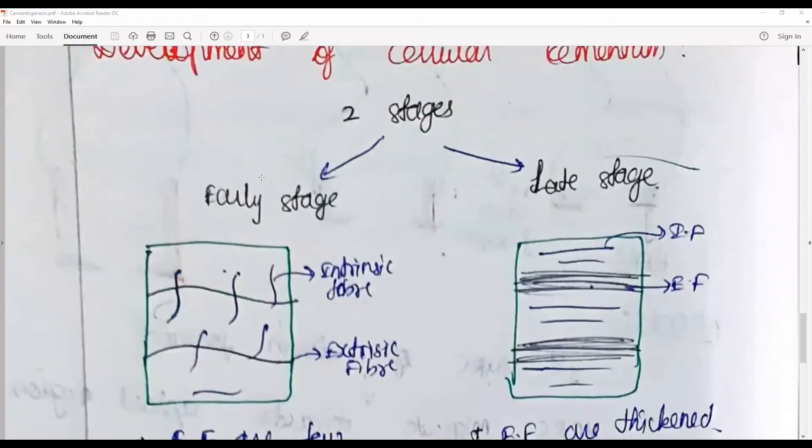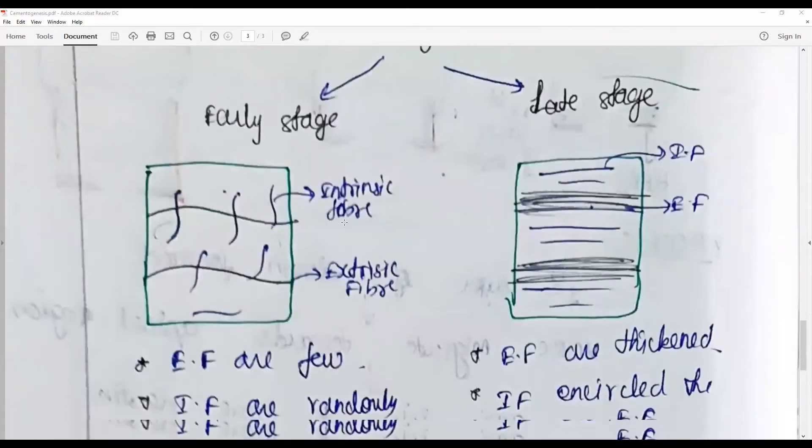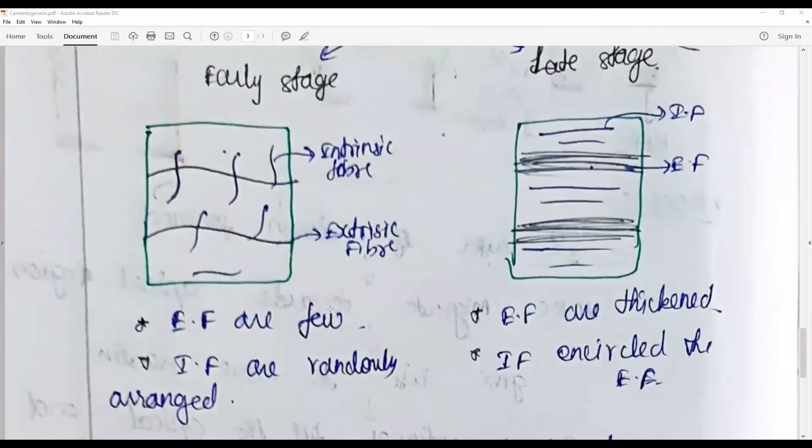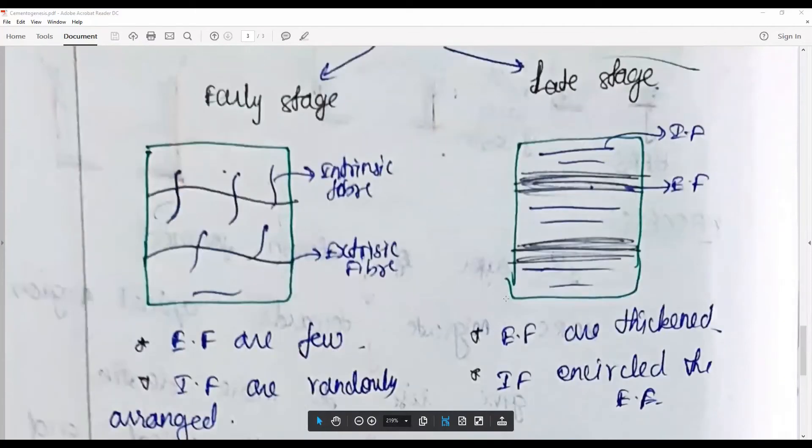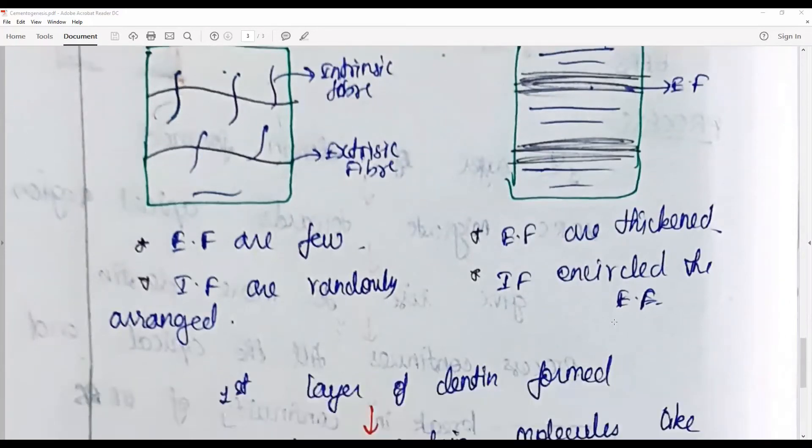The development of cellular cementum happens in two stages: early stage and late stage. In the early stage, the extrinsic fibers are very few and the intrinsic fibers are randomly arranged, whereas in the late stage the extrinsic fibers are thickened and intrinsic fibers encircle the extrinsic fibers.